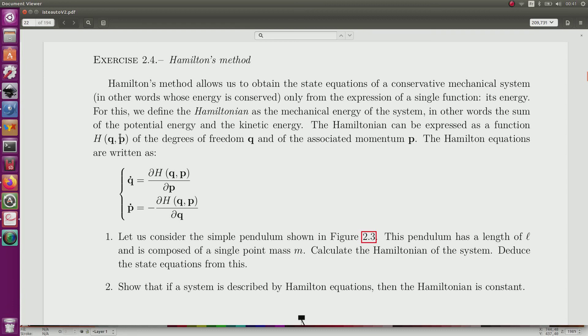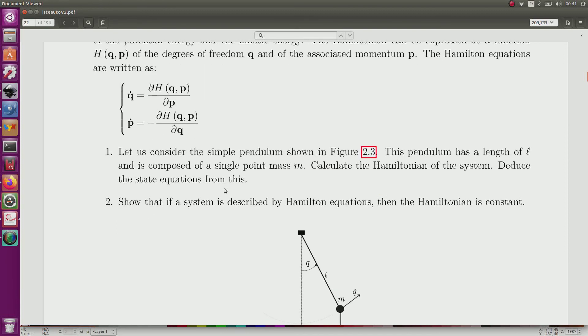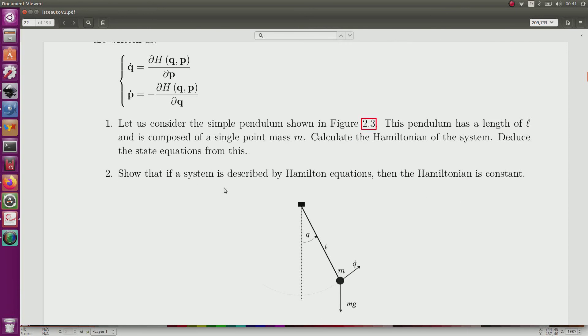We will not try to understand why it is like this, but we will just use it in order to find the state equation of the pendulum. For this, we consider the simple pendulum given here, which has a length which is known, a mass, and it has one degree of freedom which corresponds to q.